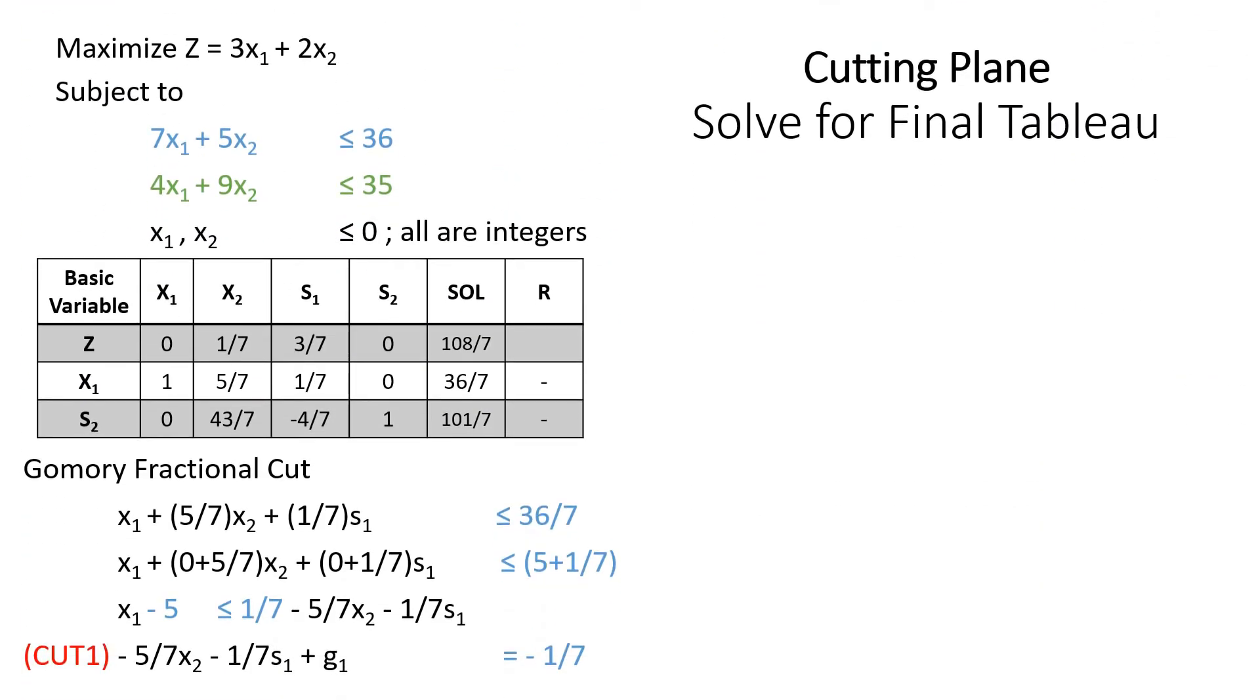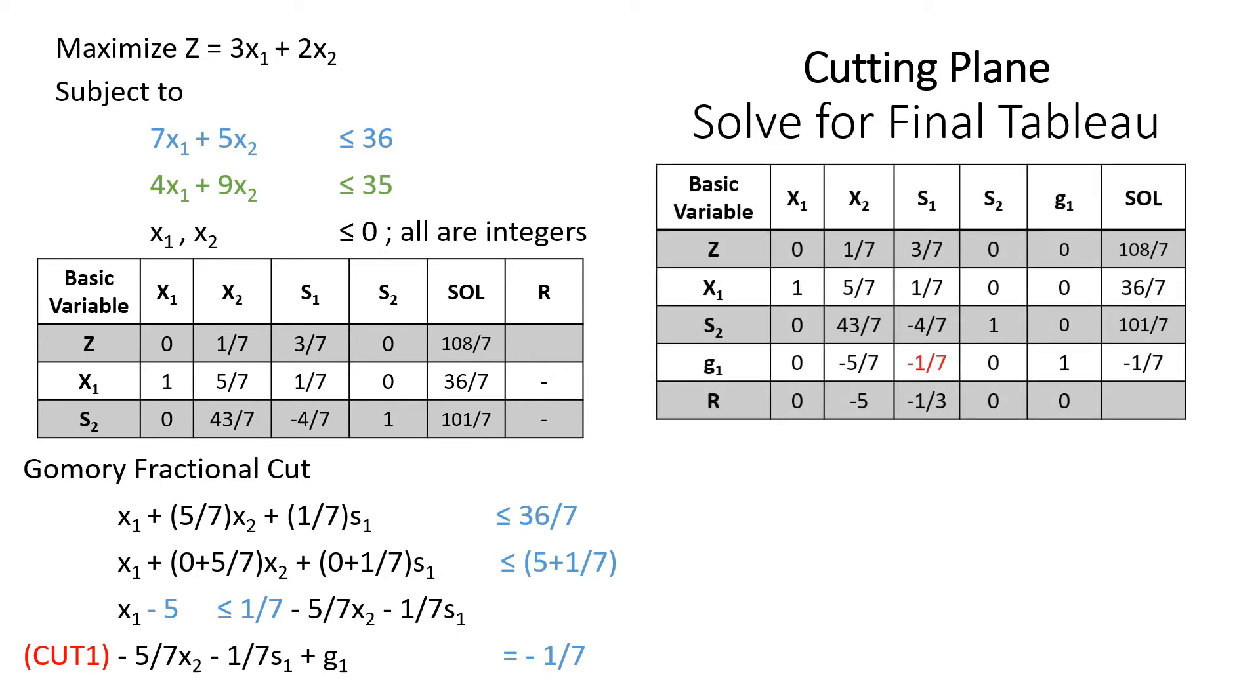Adding the third constraint will make our tableau unsolvable with the simplex method because there is no negative value in the z row. Let's solve the tableau with dual simplex method. Observe the right hand side. We have a negative 1 over 7.